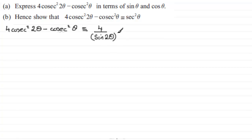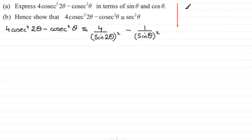For cosec²θ, that's going to be the same as minus 1 over sinθ, all squared. Now you should be familiar with the identity for sin2θ — you most probably know it as sin2a ≡ 2sinacosa. Obviously there's not much difference between this and sin2θ; a is just θ.